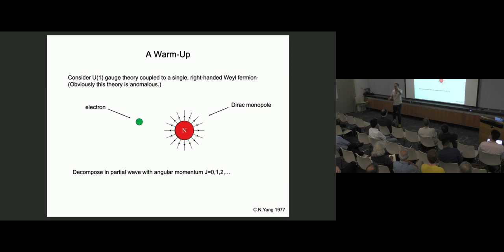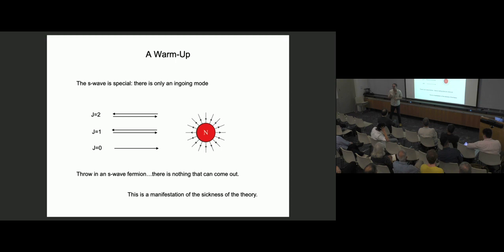The thought experiment is to put a magnetic monopole in the U(1), throw this Weyl fermion at it, and ask what bounces back. You decompose the field into partial waves — Yang told us how to do this in 1977 — and solve the Dirac equation in the presence of the monopole. What you find is a lowest angular momentum mode, which turns out to be an S-wave. This is slightly weird because fermions usually have spin-half, but there's an anomalous shift by a factor of half due to the electric and magnetic charge. Then there's a series of higher angular momentum modes, J=1, J=2, and so on.